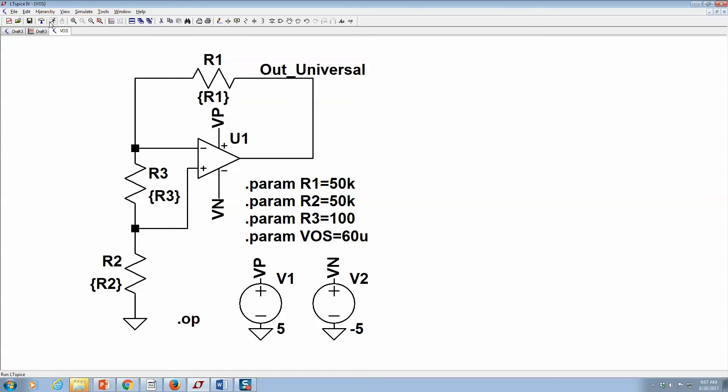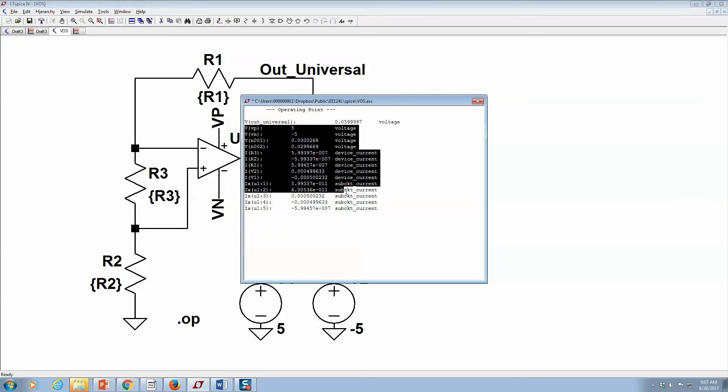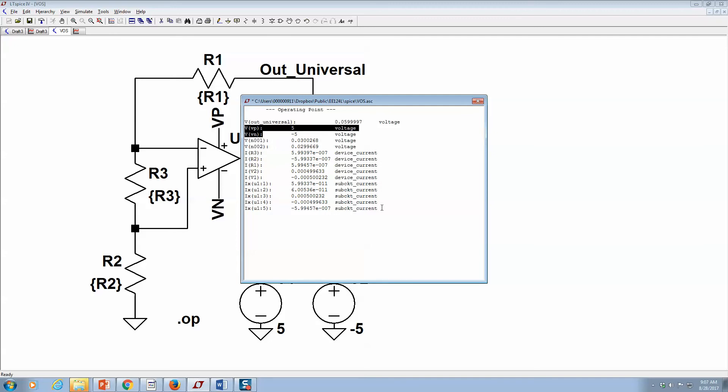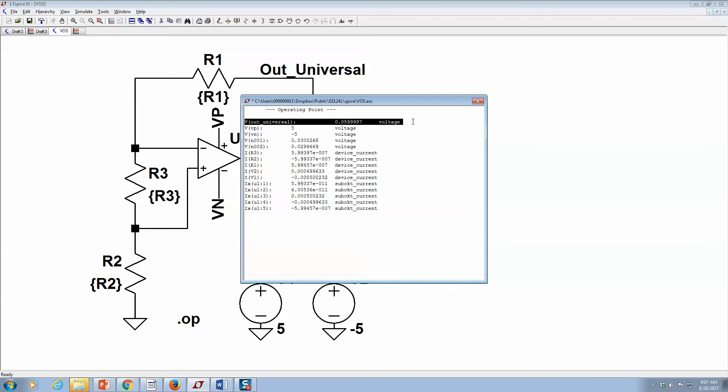We can see all the data. Now if I were presenting this data, I'd probably try to get rid of a lot of these things because really all we need is this, and you could probably just put it in a table. We're getting 0.05999997, which should be a thousand times the offset voltage.